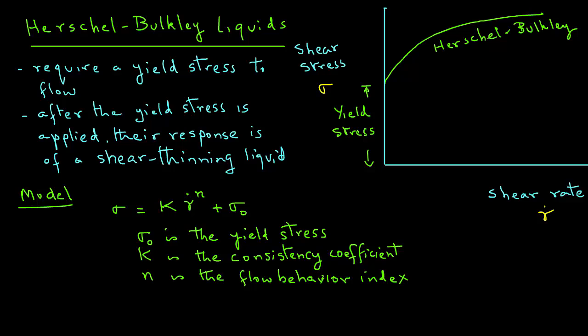The units of sigma zero are Pascal, the units of k are Pascal second raised to power n, and n, the flow behavior index, is dimensionless.